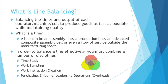What is line balancing? Line balancing is balancing the times and output of each operator, machine, or even whole production cell to produce goods as fast as possible while maintaining quality. Sometimes when you rush an operation, you lose quality. But as long as you can meet your quality standards and improve the speeds, things are going well. And you do this by balancing all the different parts involved in production.